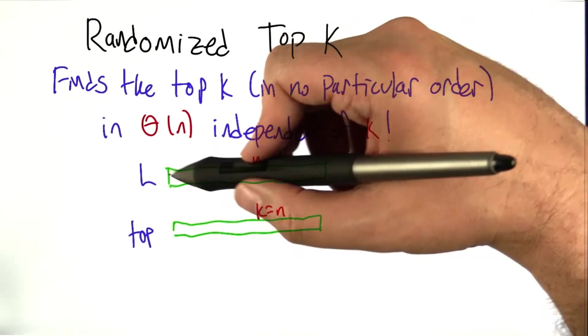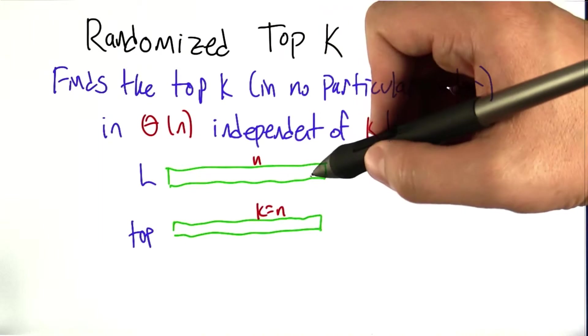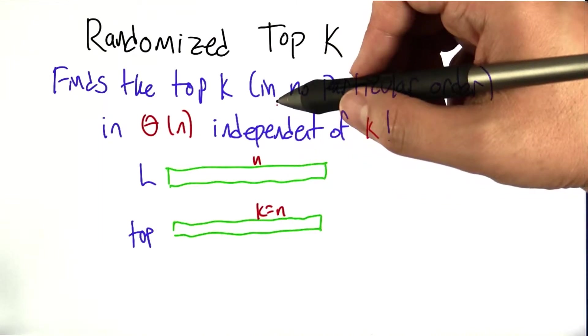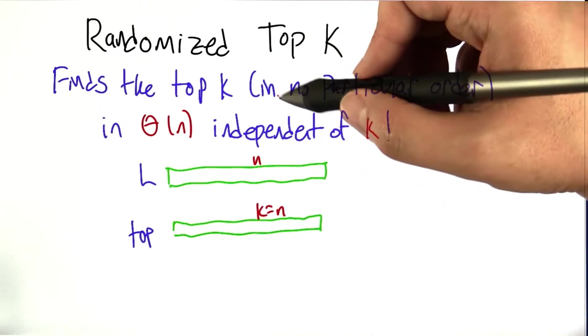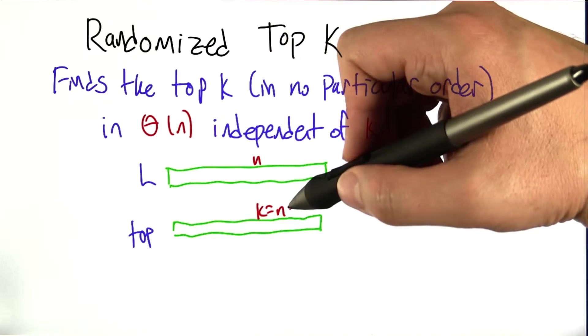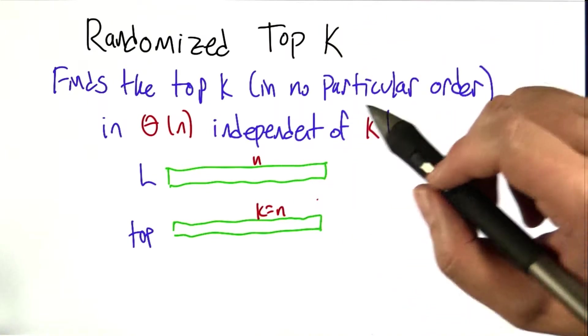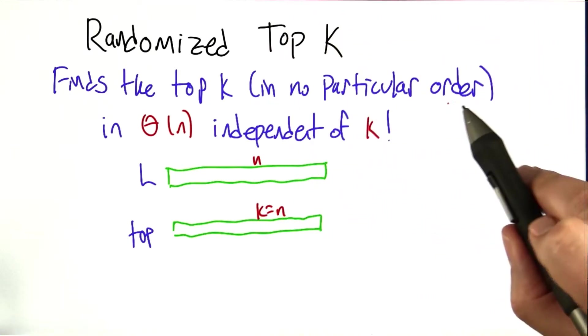For example, if the list has n elements in it, it takes us n log n time to sort it. How could it take us less than that to find the top k if k is equal to n? Well, it's actually, this phrase here is really important, in no particular order.